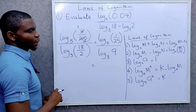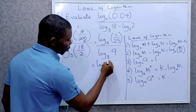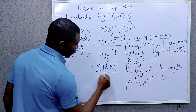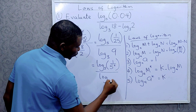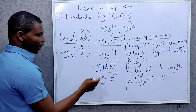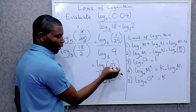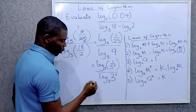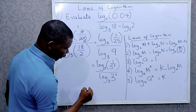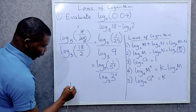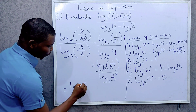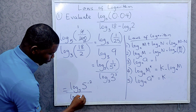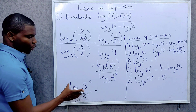Now 25 can be written as 5 raised to power 2, so the numerator becomes log base 5 of 1 over 5 squared. And 9 can be written as 3 raised to power 2, so the denominator is log base 3 of 3 squared. Since 5 squared is in the denominator, bringing it to the numerator makes the power minus 2. So the numerator is log base 5 of 5 raised to power minus 2.